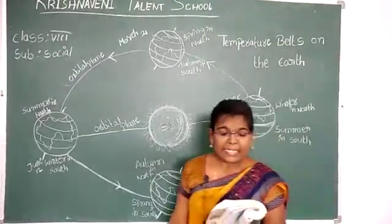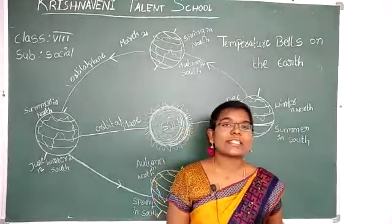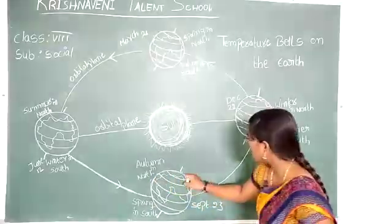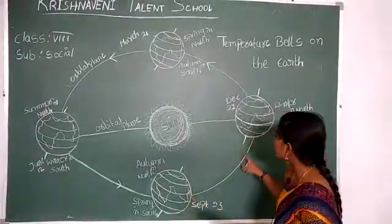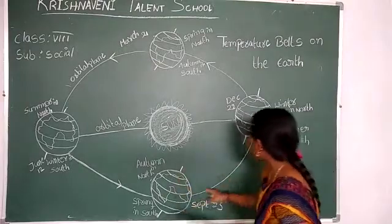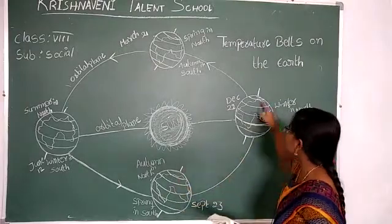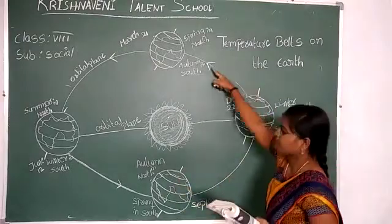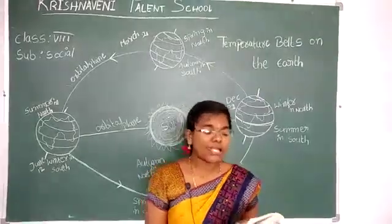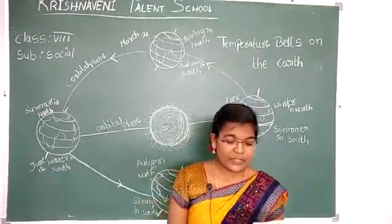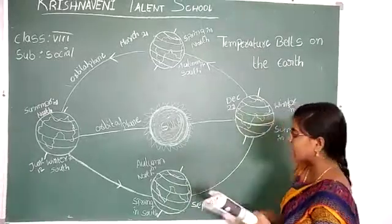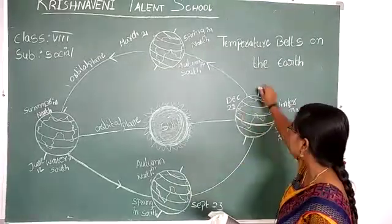The angle keeps increasing as we move towards the poles. When we move towards the pole, the angles are changing. As a result, it is hotter in areas which face the sun directly and less hot in areas that receive sun rays at an angle.